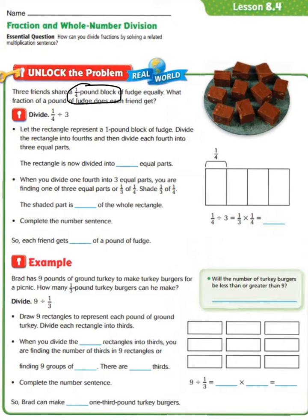Now let's break it apart. Let the rectangle represent a 1 pound block of fudge — that is this rectangle here. Divide the rectangle into 4ths, and then divide each 4th into three equal parts. So you've got it into four pieces, and then we have to divide each 1/4 piece into three equal parts. Let's do that now.